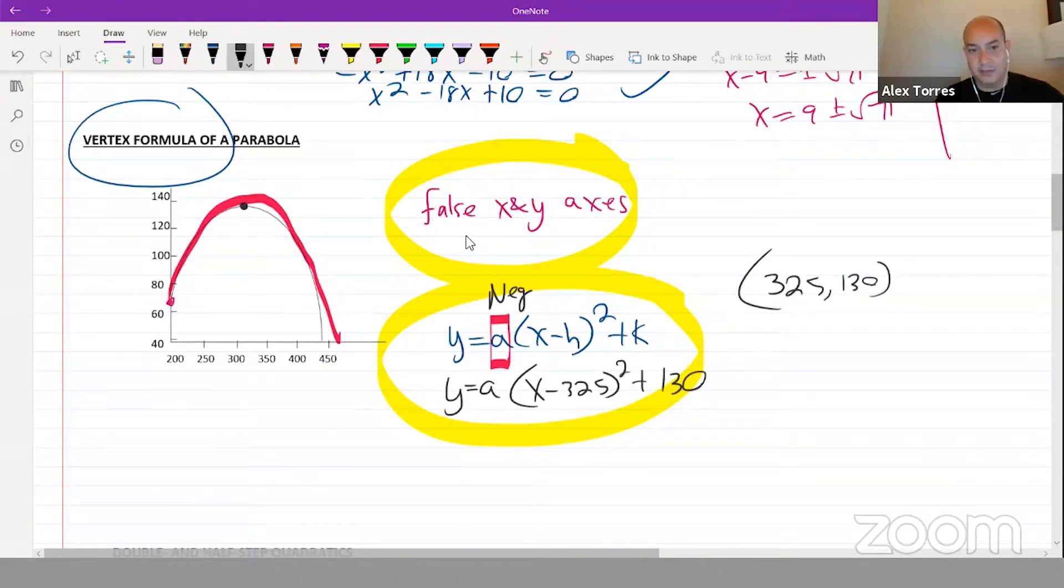Now that a in the front, all you need to be able to do to find out what a is, is take one of the points, like in this case, we can say this point right here, 200 comma 70, roughly.